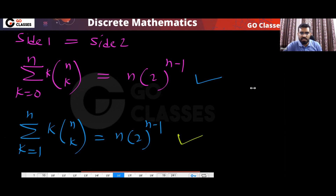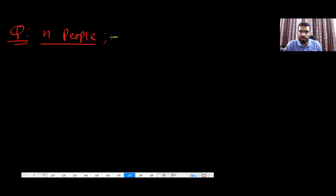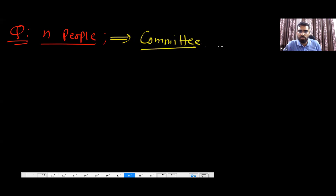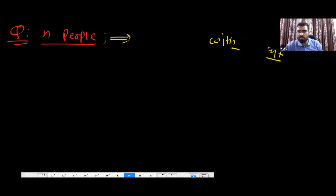This is your target problem: you have total N people, and you need to create a committee with a president. In this committee there should be a president — it's like a team with a captain like Rohit Sharma. So first you directly select the captain — N ways.